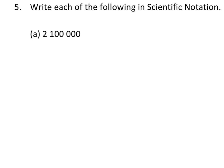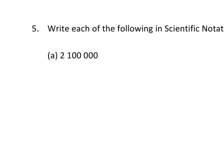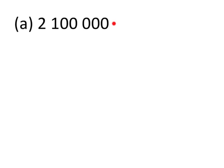Question 5 asks us to write each of the following in scientific notation. For question 5a we have 2,100,000. Since it's a whole number, the decimal point is located at the end. To write it in scientific notation we move the decimal point into a position between the 2 and the 1 — that involves jumping 6 places — giving us 2.1 times 10 to the power of 6.